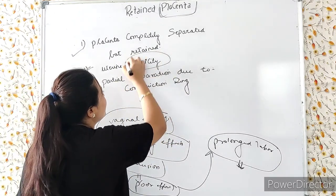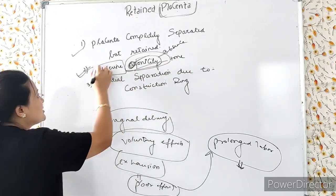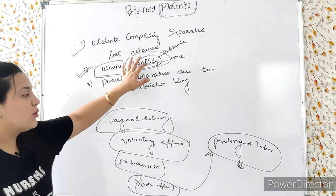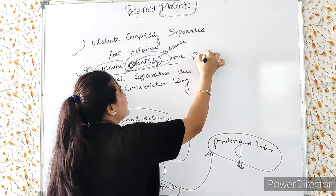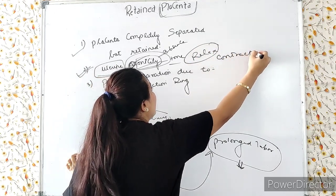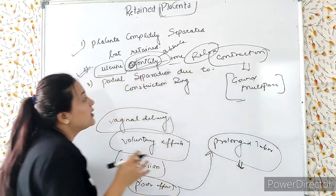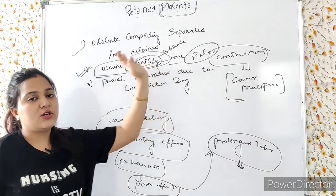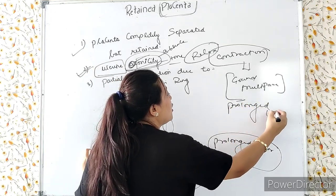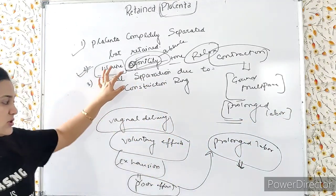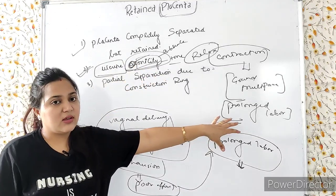The next cause is uterine atonicity. Atonicity means absence of tone — the uterus has no tone, it is relaxed and cannot contract. This occurs in cases of grand multipara, where the uterus loses its tone. It also occurs in cases of prolonged labor, where uterine atonicity can develop because excessive efforts have been applied.